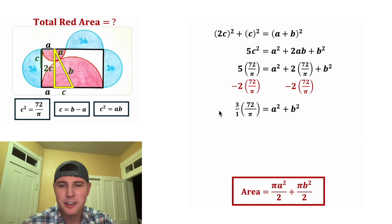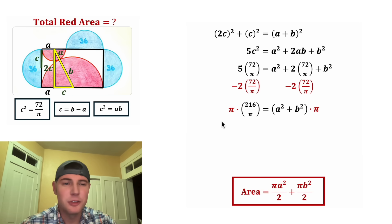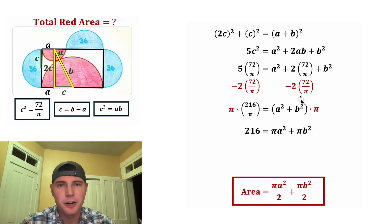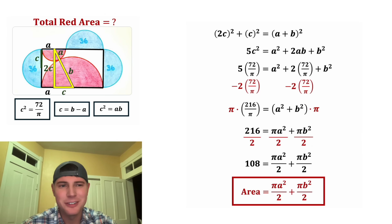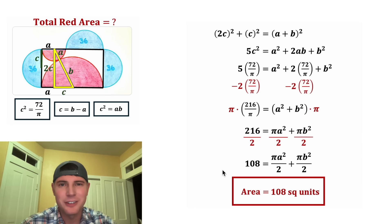Cleaning up the left side: 3 × 72 = 216, so we have 216/π = a² + b². Now let's multiply both sides by π — the π's cancel on the left, giving 216, and on the right we have πa² + πb². Next let's divide everything by 2: 216/2 = 108, and that equals πa²/2 + πb²/2.